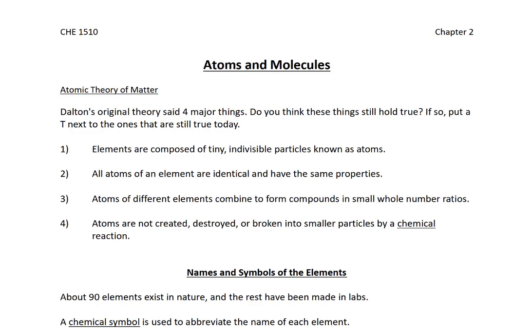Number two: all atoms of an element are identical and have the same properties. This one makes sense except that since Dalton's time we've figured out about isotopes. Isotopes are elements that have the same number of protons but differ in their number of neutrons, so they are not identical anymore. This one is also false.